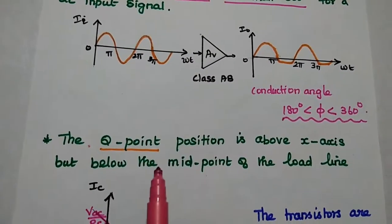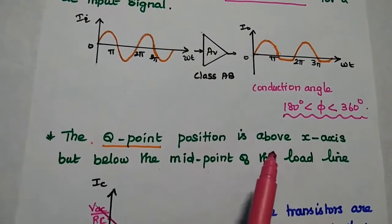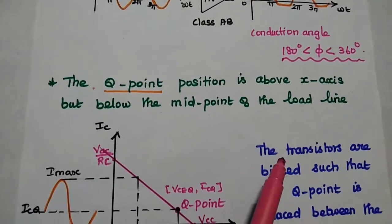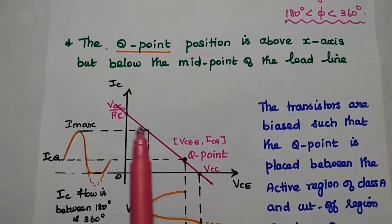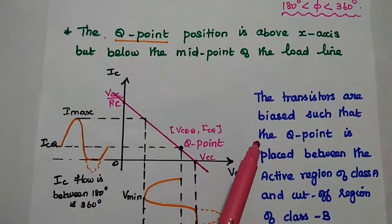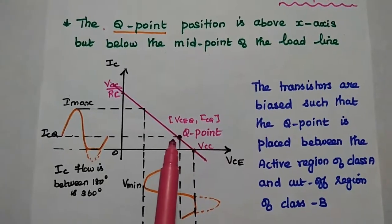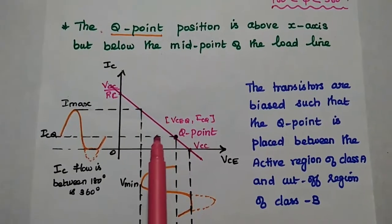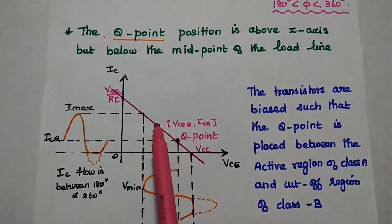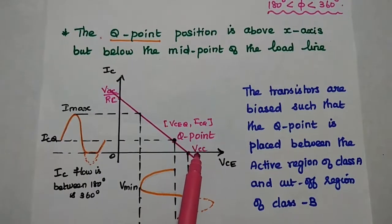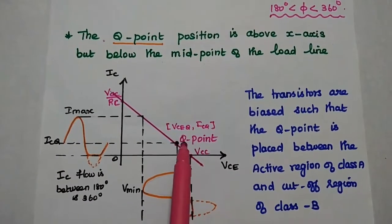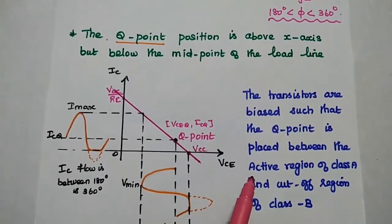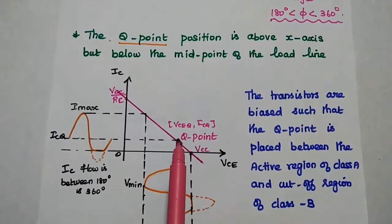In Class AB amplifier, the Q point — that is the operating point of the transistor — is placed above the x-axis but below the midpoint of the load line. The load line is an important characteristic in transistor circuits, drawn between the output parameters: the collector current and the collector-emitter voltage. In this AC load line, we position the Q point just above the x-axis but below the midpoint. In Class A amplifier, the Q point is at the midpoint; for Class B, it is on the x-axis; but for Class AB, it is placed above Class B but below Class A — between the active region of Class A and the cutoff region of Class B.